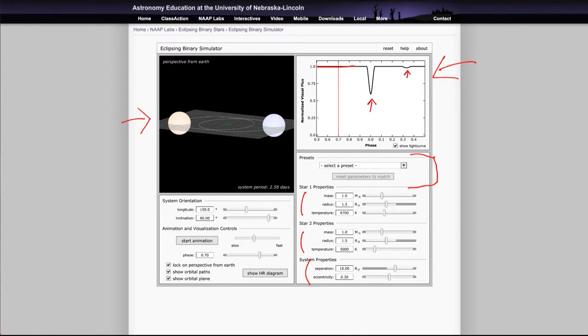So if we wanted to run this animation forward, we can click on Start Animation. And you can watch the red line shows where you are at that point. So you can see that as one star passes in front of the other, there will be a dip in the amount of light that is visible from the entire system.